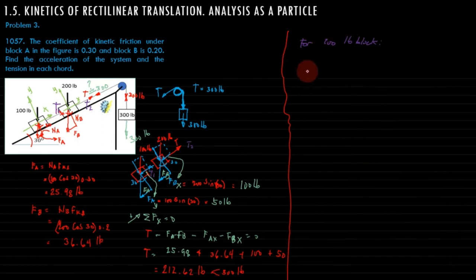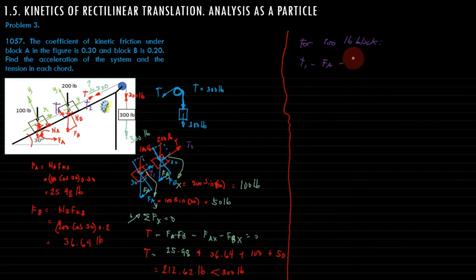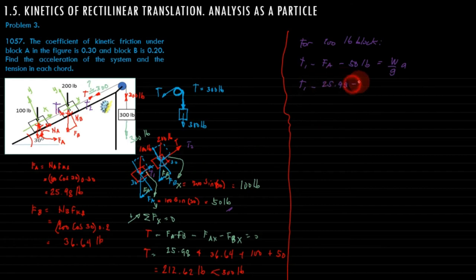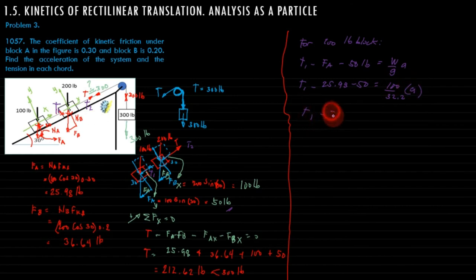For the 100-pound block, the positive force along x is T1, and negative forces are friction F_A = 25.98 and the horizontal component of 100 pounds = 50 pounds. So: T1 minus 25.98 minus 50 equals 100 over 32.2 times A. This simplifies to T1 minus 75.98 equals 3.11 A. We denote this as equation 3.